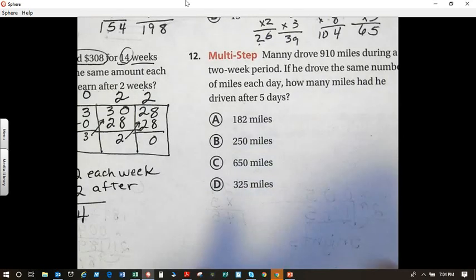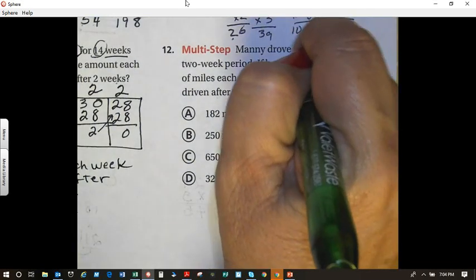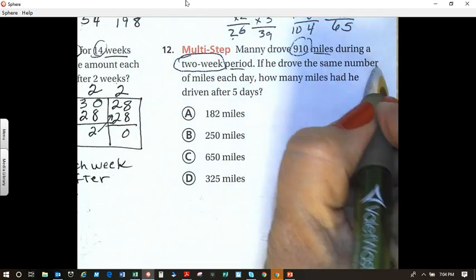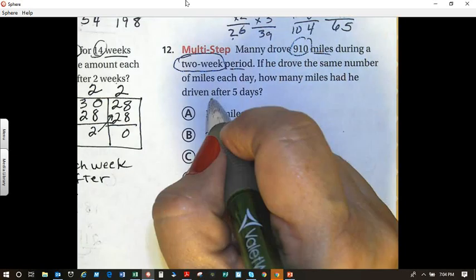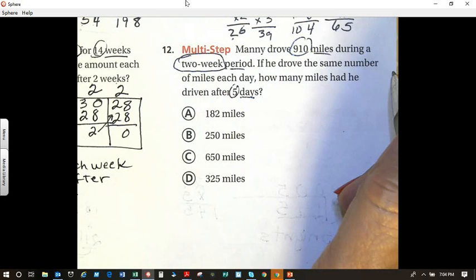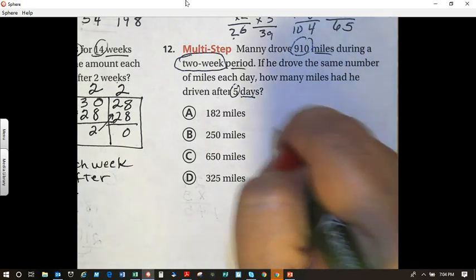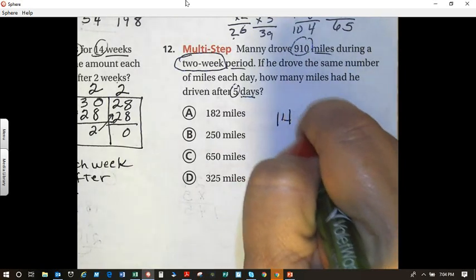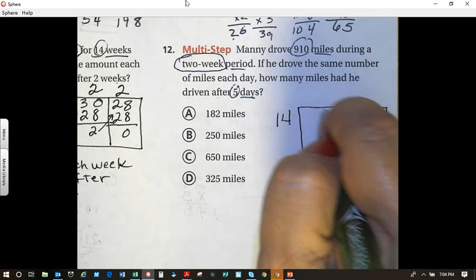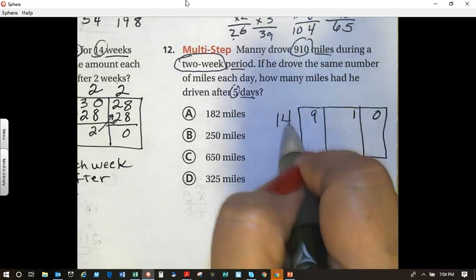Let's look at number 12. Manny drove 910 miles during a two-week period. If he drove the same number of miles each day, how many miles had he driven after 5 days? So let's look at what we have. I have two weeks. How many days are in two weeks? 14 days. Can I make my rectangle box? I need to have three columns because I have three numbers. 9, 1, 0. My multiplication sign.